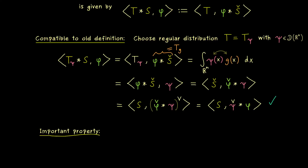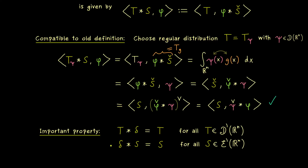To close this video, I show you the most important property of this convolution: you can apply any distribution t convolved with the delta distribution, and by using the definition it is totally clear that we get out the distribution t again. Hence, if we see the convolution as a multiplication, then the delta distribution acts as a right identity — and in addition it also acts as a left identity if we choose distributions of compact support. It is very helpful to have such an identity element when dealing with applications, for example when we want to solve partial differential equations. Applications we can discuss in future videos.